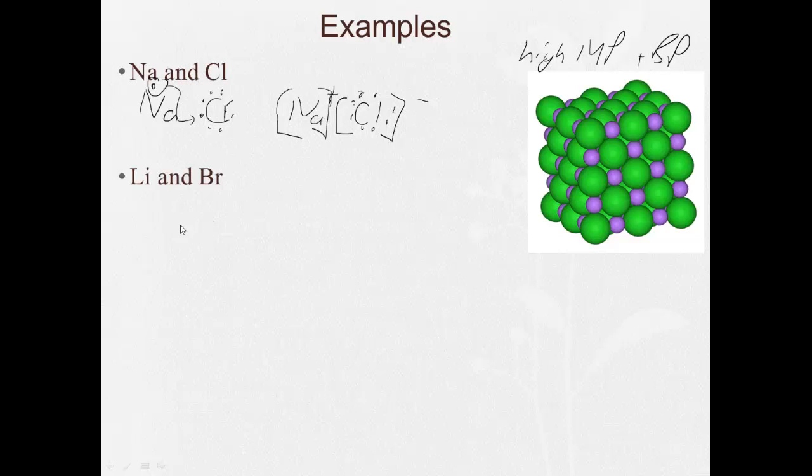All right, lithium and bromine, right? Lithium has one valence electron. Bromine has seven. We've got room for one more. So lithium says, here you go. And we end up with Li plus and Br one, two, three, four, five, six, seven, eight minus. And same as with the sodium chloride, they stick together.